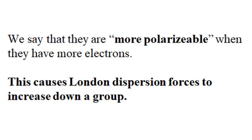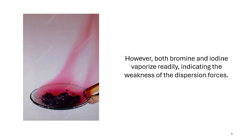We say that larger atoms are more polarizable. Iodine is more polarizable than bromine, then chlorine, then fluorine. This causes dispersion forces to increase down the group — iodine is more polarizable, therefore stronger IMF and higher boiling point. However, both iodine and bromine vaporize readily at room temperature, indicating that the LDF in both bromine and iodine is still relatively weak.